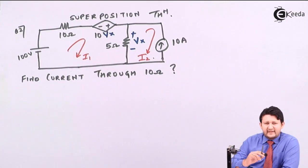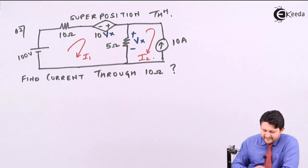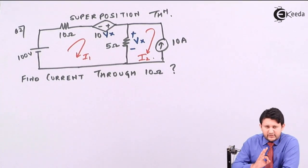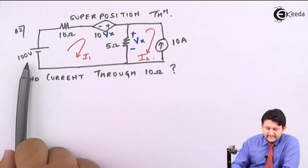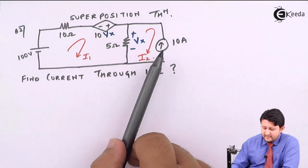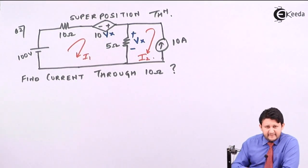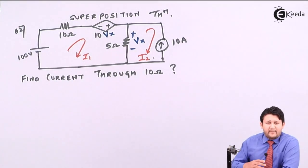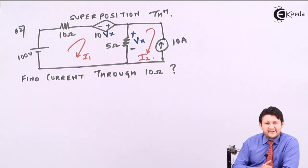When I talk about the Superposition Theorem, the key point is: you need to solve keeping only one independent source active at a time. Observing this circuit, there are three sources — one independent voltage source, one independent current source, and one dependent source. Since Superposition applies only to independent sources, you have two cases to solve.